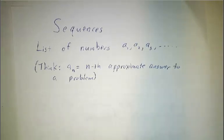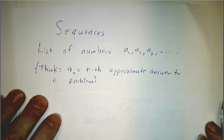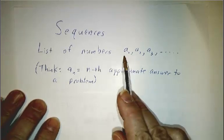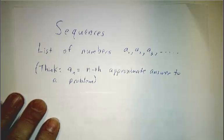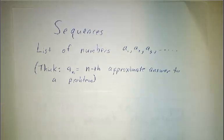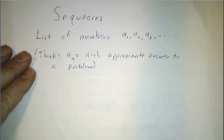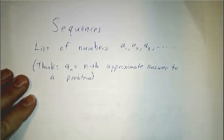Now, sequences are just lists of numbers. And the reason that you have a list of numbers is because the first number is your first guess, and your second number is your next guess, and your third number is your next guess. And you keep making approximate answers. So if you think of a_n as the nth approximation to whatever problem you're trying to solve, you're hoping that these numbers get closer and closer to the true answer. You're hoping that you can get the true answer by a limit of these approximate answers. This appears all over calculus.